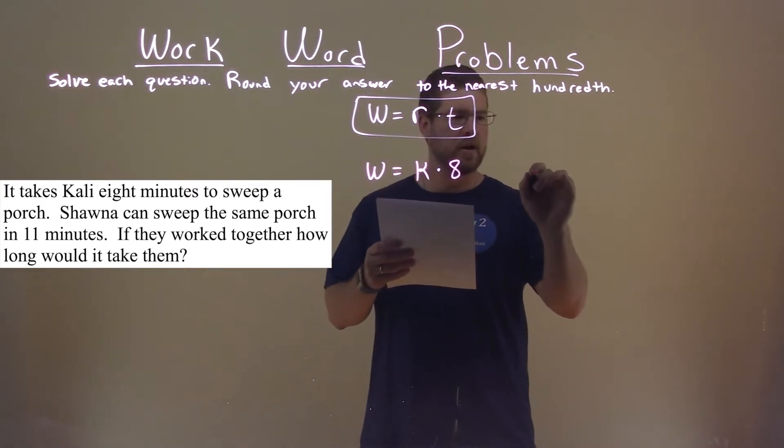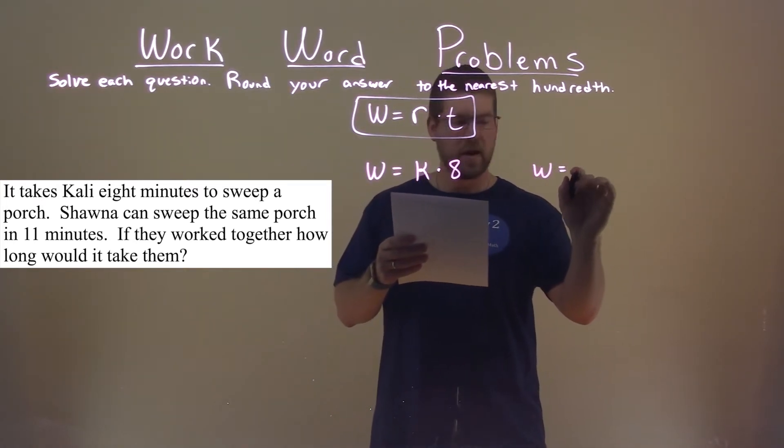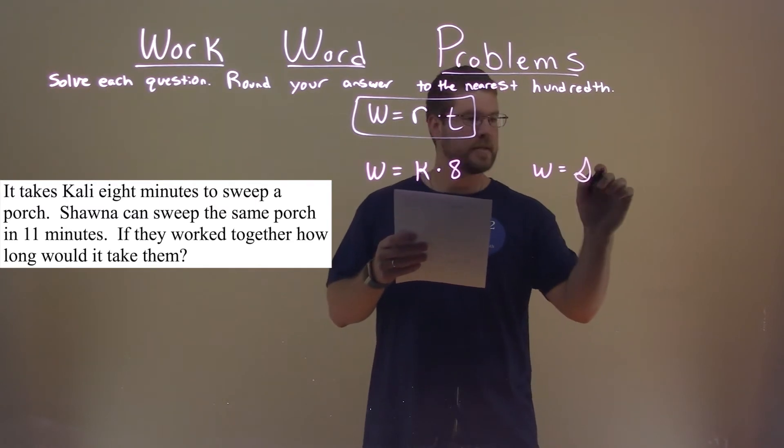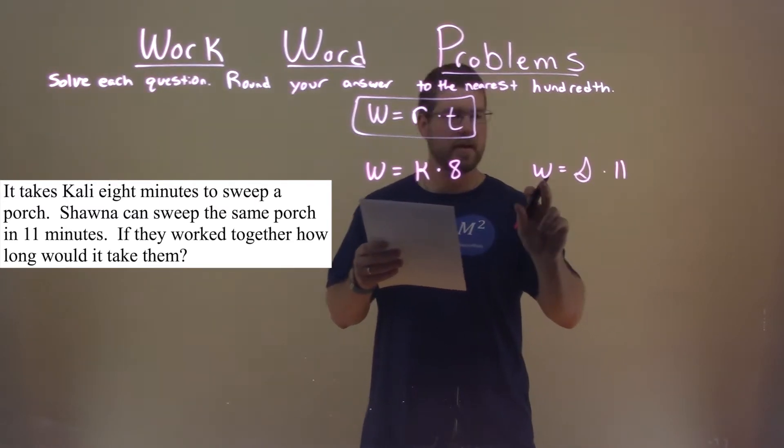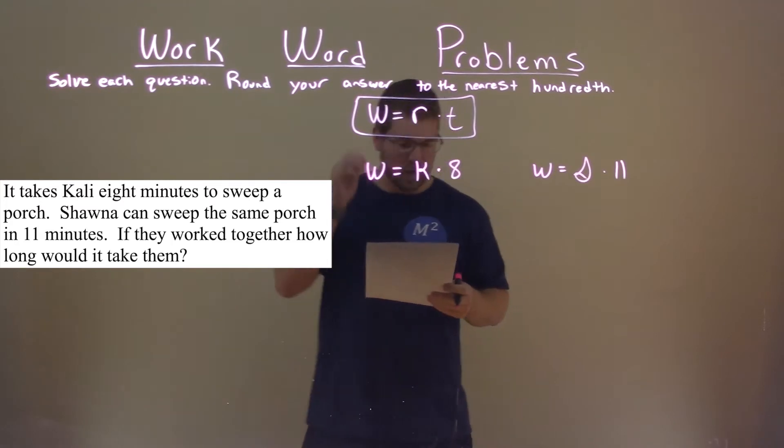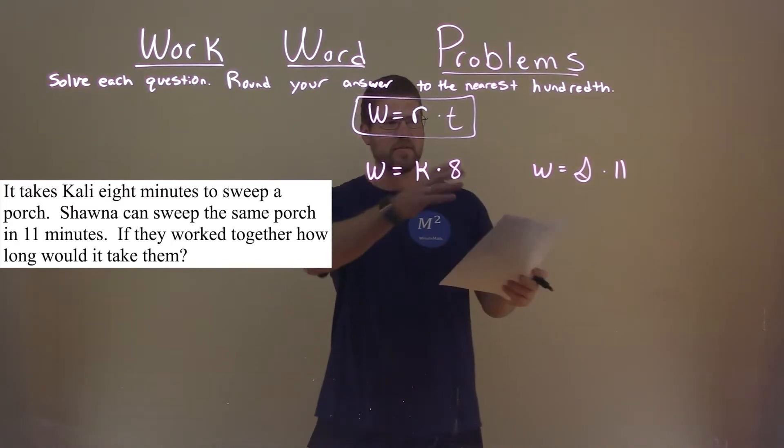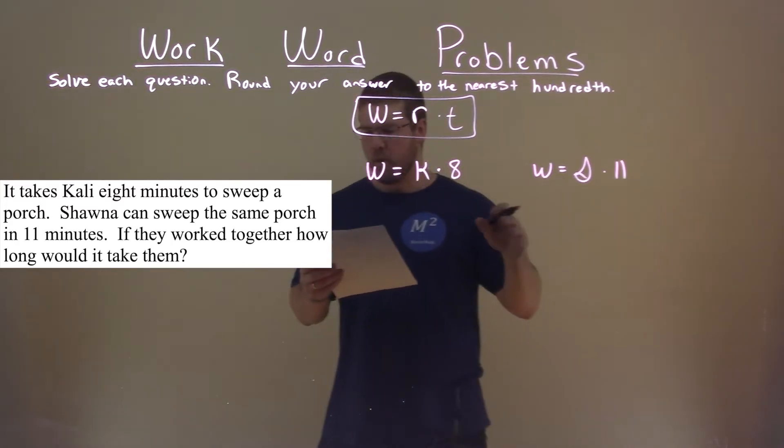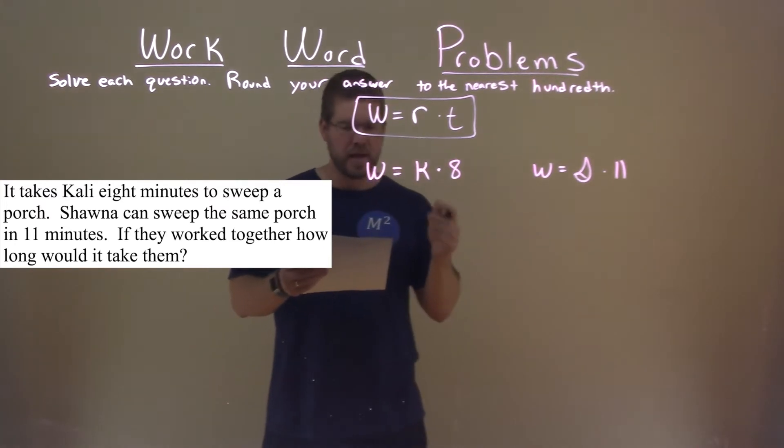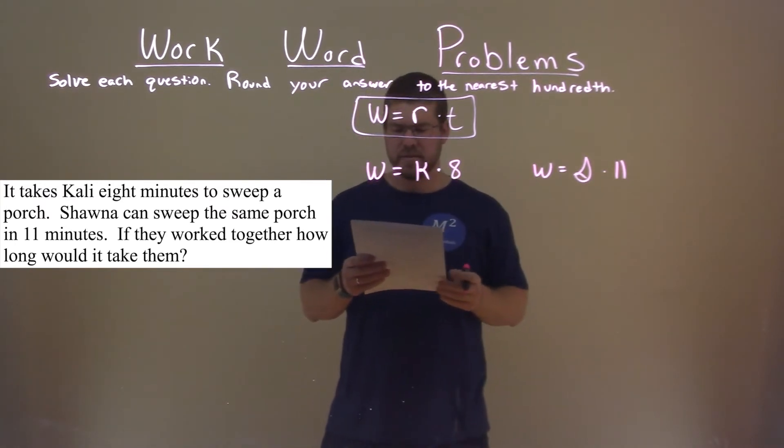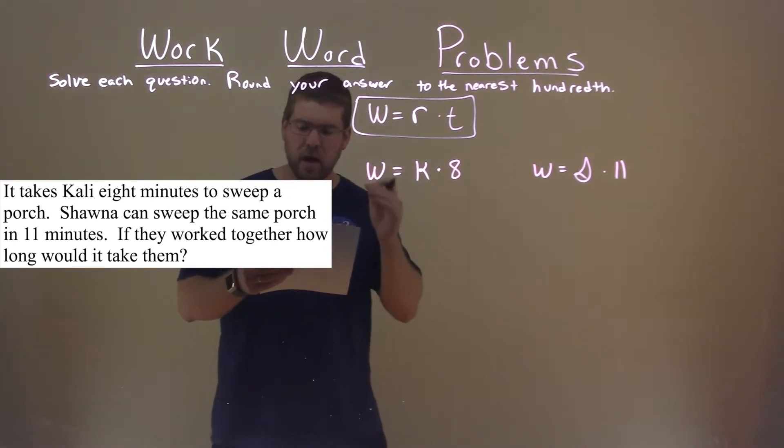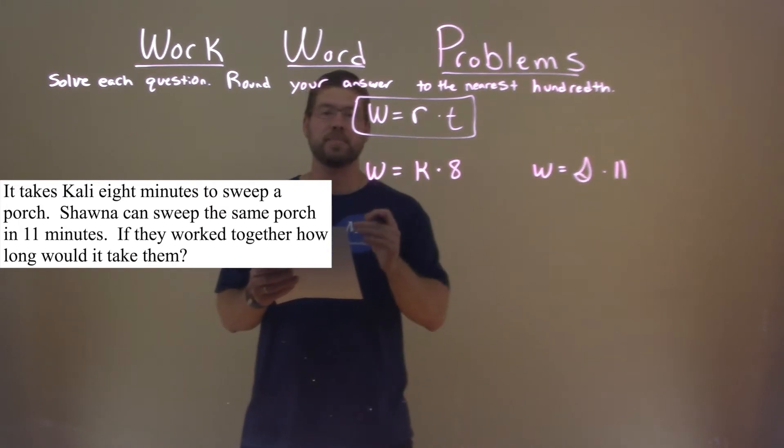Shauna does the same thing. Shauna's work rate is called S. Her work rate times 11 minutes completed the job. So we have these two equations, but we need to find something else. The last thing they tell us is if they work together, how long would it take them? So what happens if they work together?